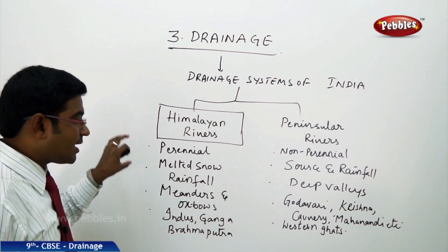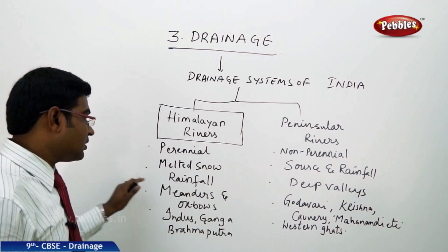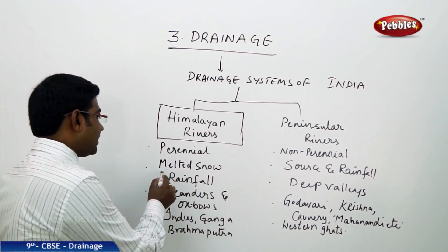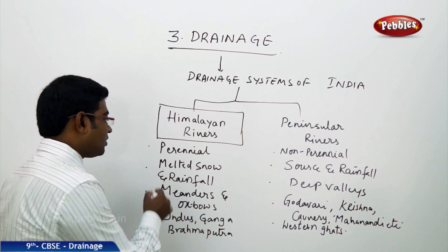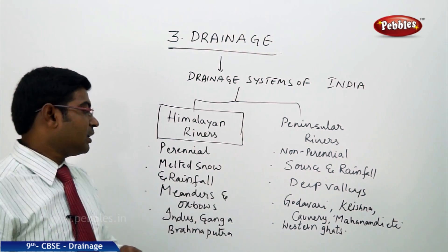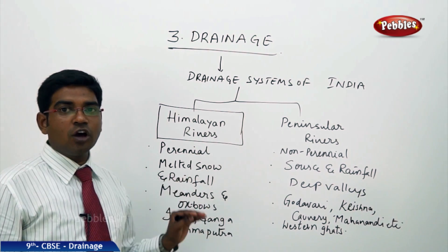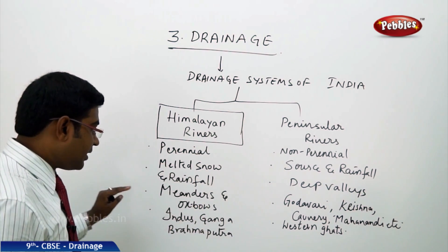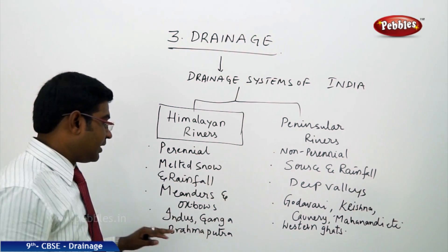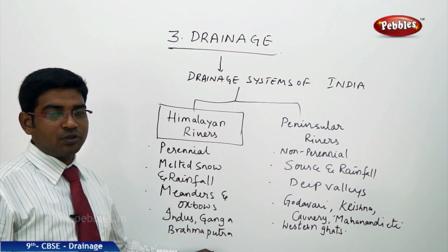Their sources, as mentioned, are from the Himalayas — from melted snow and also from rainfall. In the course of their journey, they make many meanders and oxbow lakes. The famous Himalayan rivers are Indus, Ganga, and Brahmaputra.